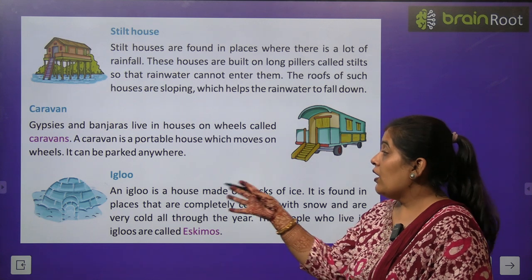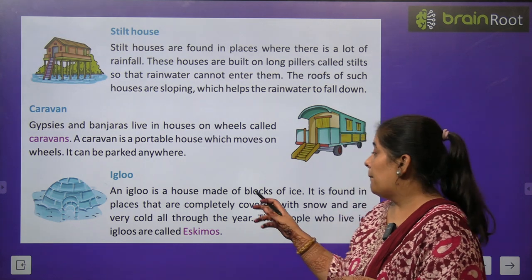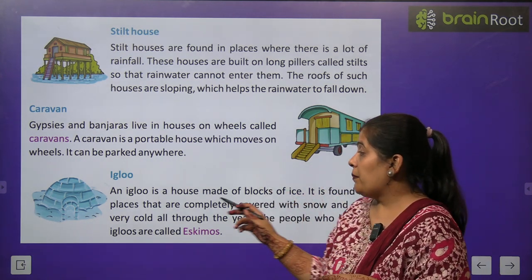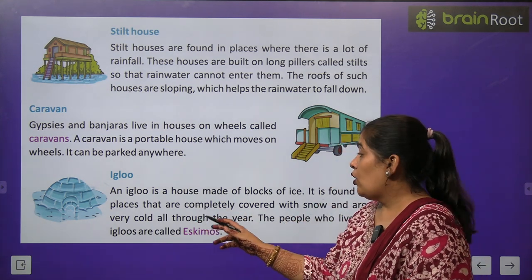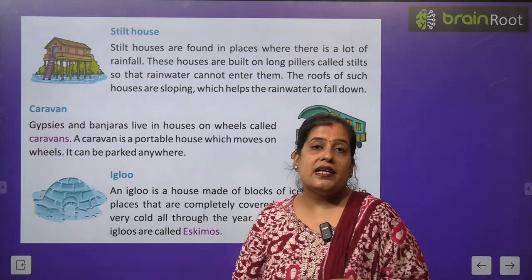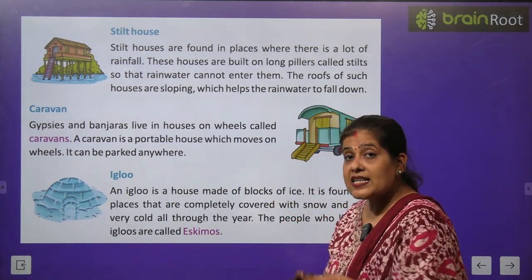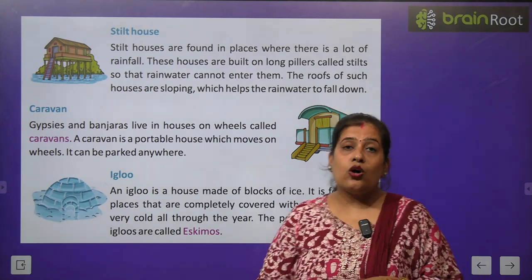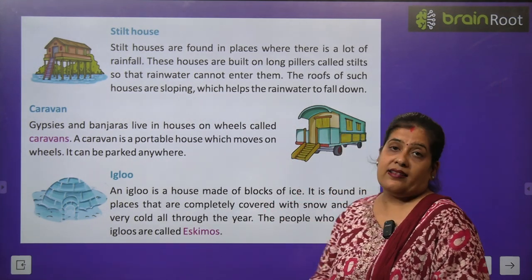इगलू क्या होता है? इगलू बर्फ से बना मकान होता है — यह ice rocks से मिलकर बनता है. It is found in places that are completely covered with snow and are very cold all through the year. ये मकान ऐसी जगहों पर पाए जाते हैं जहाँ बहुत ज्यादा बर्फ होती है और पूरे साल ठंड रहती है. The people who live in igloos are called Eskimos — जो लोग igloo में रहते हैं उन्हें Eskimos कहते हैं.